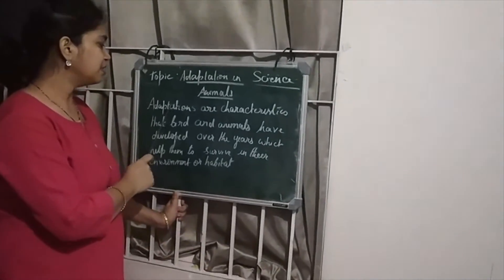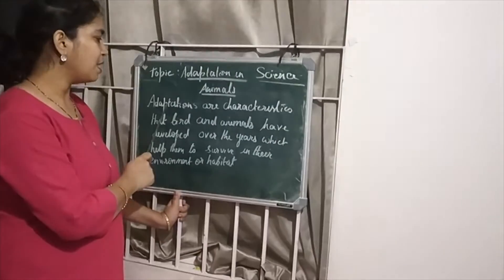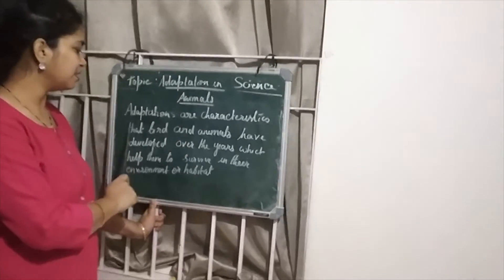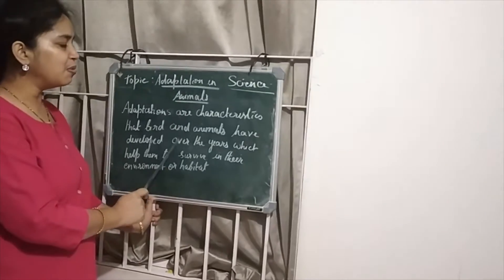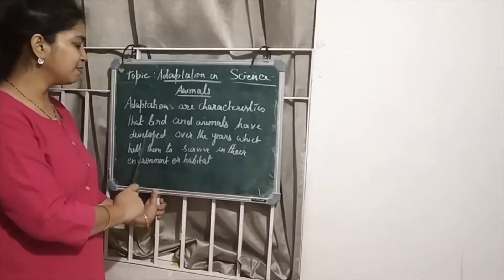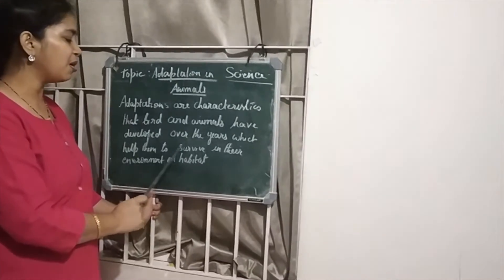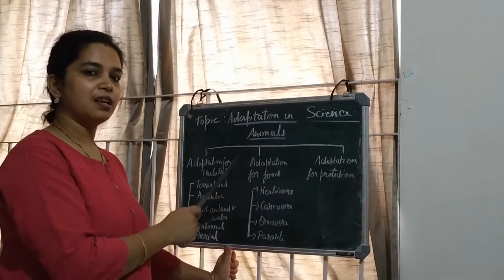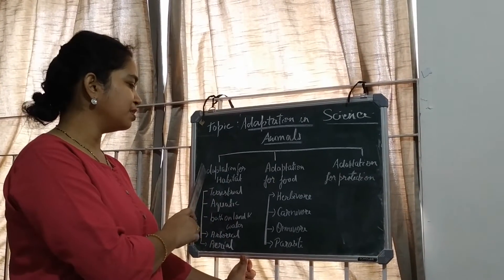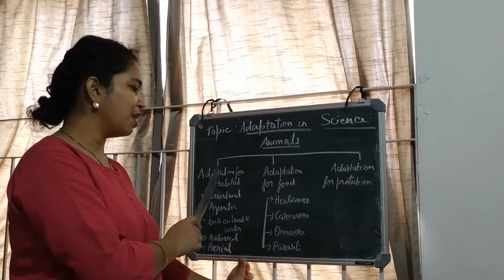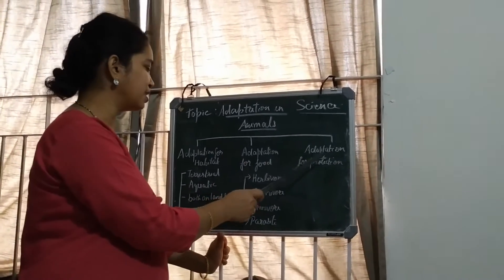Now let's learn about the definition of adaptation. Adaptations are characteristics that birds and animals have developed over the years which help them to survive in their environment or habitat. Adaptation in animals can be of three types: adaptation for habitat, adaptation for food, and adaptation for protection.